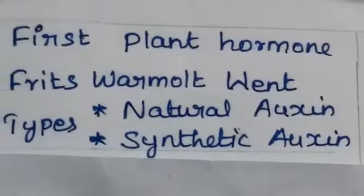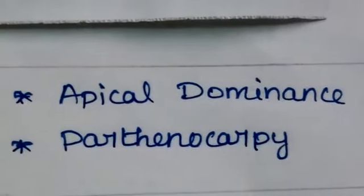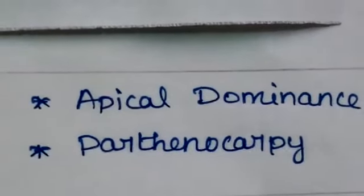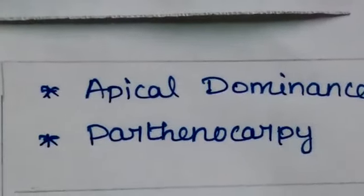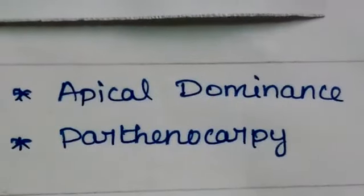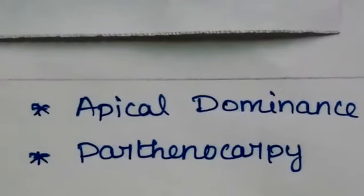Synthetic auxin is an important topic. The physiological effects of auxin include apical dominance — the auxin produced by the apical buds suppresses the growth of lateral buds. Another effect is parthenocarpy: seedless fruits without fertilization are induced by the external application of auxin.